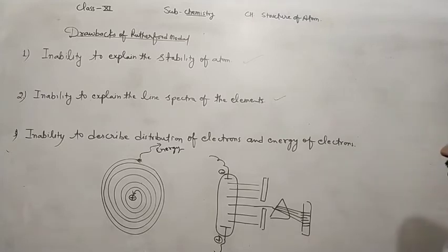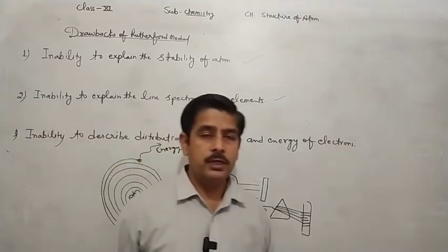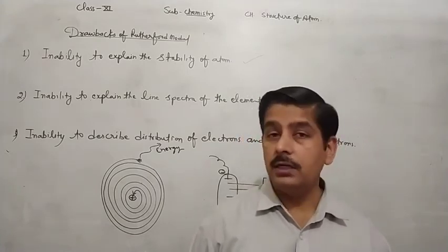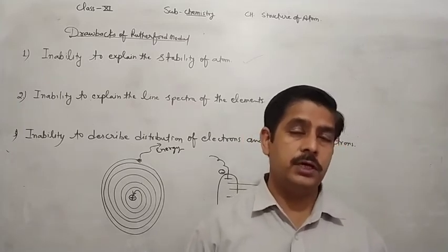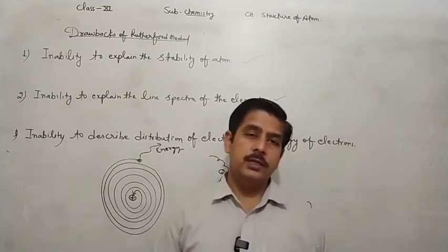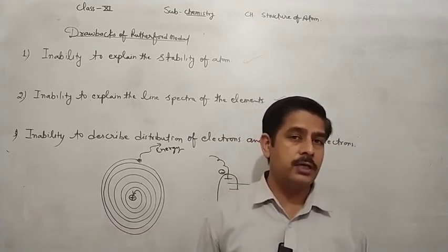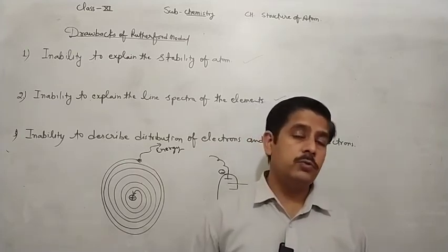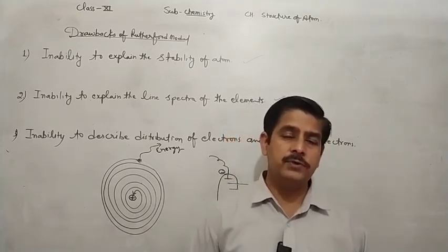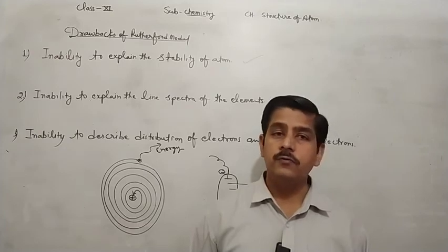The third drawback is the inability to describe the distribution and energy of electrons. Rutherford's model addressed only the revolution of electrons but did not explain how electrons are arranged in multi-electron atoms. For atoms with more than one electron, the model does not tell us the arrangement, energy levels, or distribution of electrons — for example, that the first shell holds 2 electrons and the second shell holds 8.